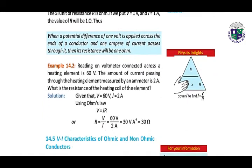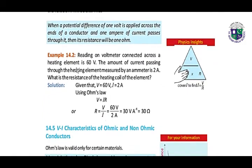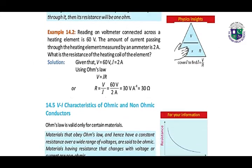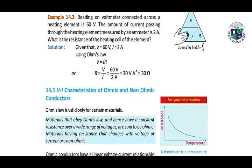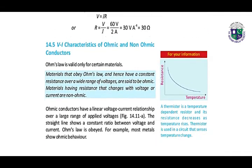We can say that when a potential difference of 1 volt is applied across the ends of a conductor and 1 ampere of current passes through it, then its resistance will be 1 ohm. Here we have example 14.2 where voltage and current are given. By applying the formula R equals V over I, we get the answer.